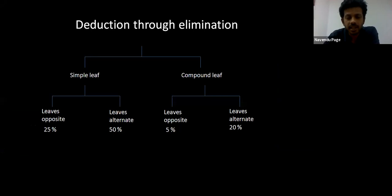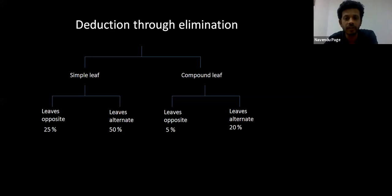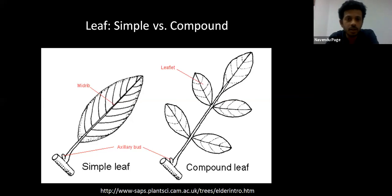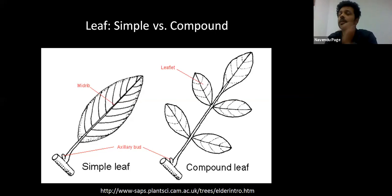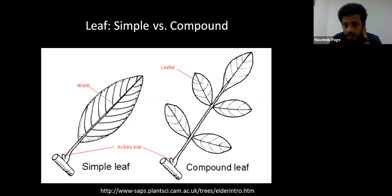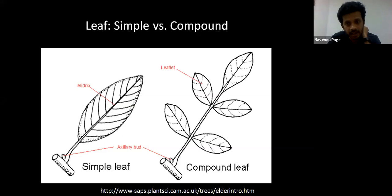That was an example of how the process of deduction through elimination works. Now let's get to the core of this webinar, where we'll learn a series of clues or characters that can help us identify plants — not just identify them, but distinguish one species from another, and gain insights into evolutionary relationships. Before I joined, I overheard you asking each other about examples of simple and compound leaves, and that's exactly what we're going to start with.